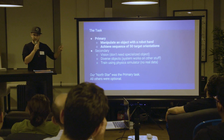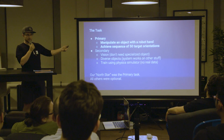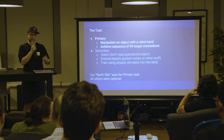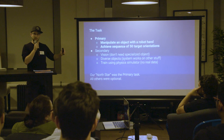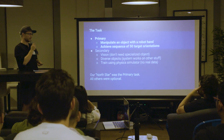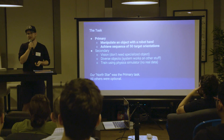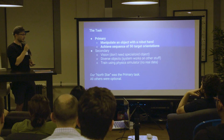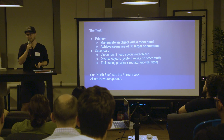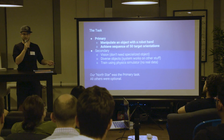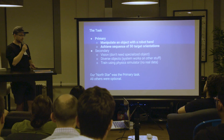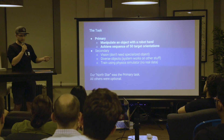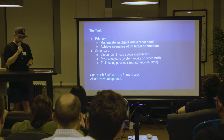Our primary goal — our north star — was to manipulate an object with the robot hand, specifically achieving a sequence of 50 independently randomly drawn rotations. Secondary goals included solving it from vision so you can just drop any object in the hand, manipulating diverse objects, and training purely using a physics simulator without any real data.